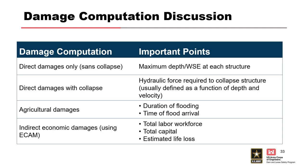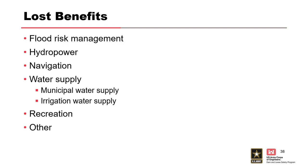For direct damages, key inputs are maximum depths, water surface elevations, first floor elevations, ground elevations, and arrival time of water. It's also critical to correctly label occupancy types and assign appropriate stability criteria to determine whether structures might collapse. For agriculture, duration is the key factor along with knowing your crop types. Indirect economic damages require considering the extent to which an event impacts local, regional, or potentially national economies.